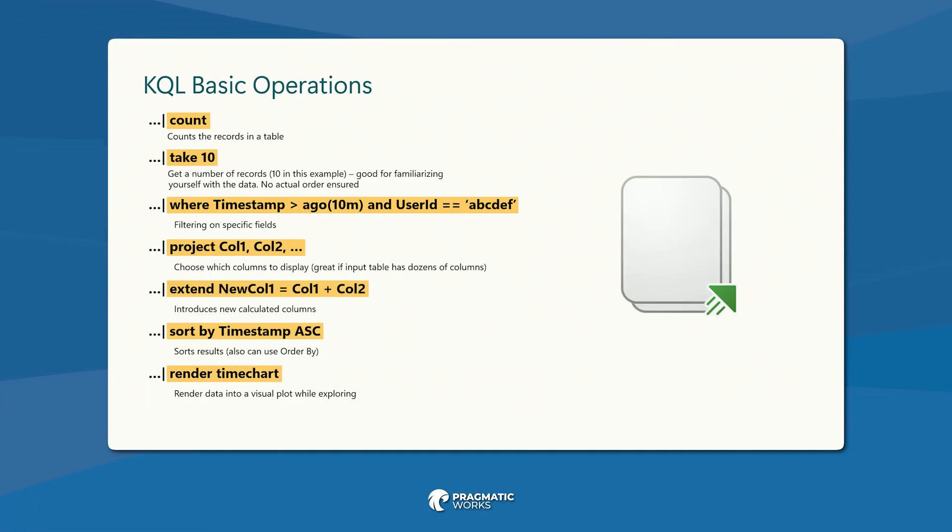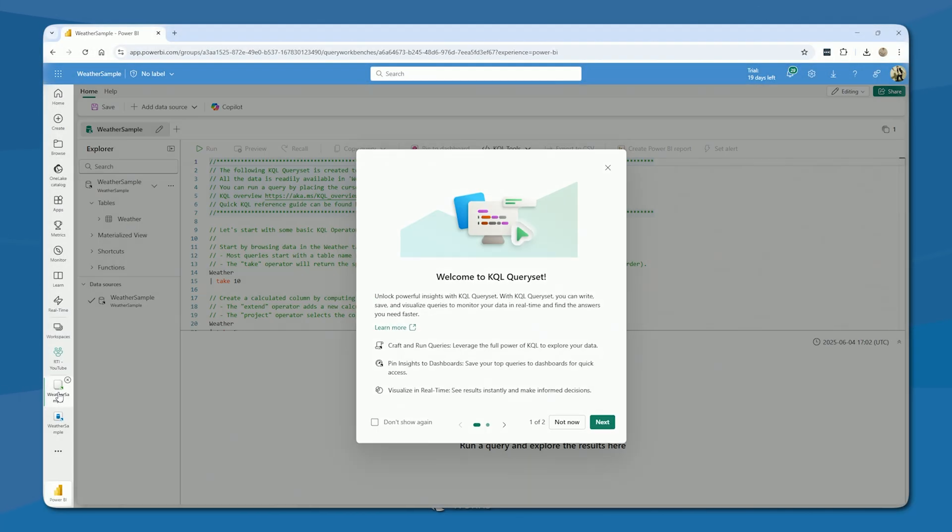We're going to focus in another video around how you can create real-time dashboards. The great part is you can use KQL or there's an option to visualize your data right there. When we run a KQL statement inside of our real-time intelligence event house, the default is to return a result grid — very tabular rows and columns as you'd expect — but we have a great little option to visualize the data right there in the KQL query set.